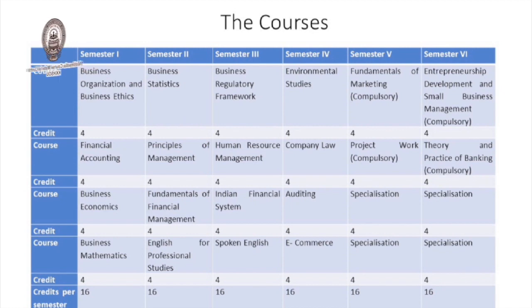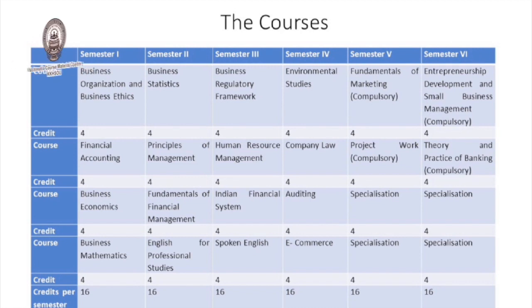In the fourth semester, learners will get one paper on Environmental Studies, one paper on Company Law, one paper on Auditing, and one paper on E-Commerce.